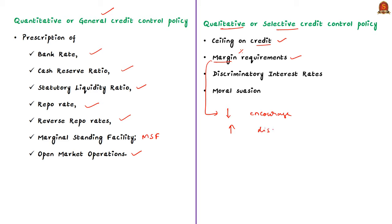One more qualitative method is through discriminatory interest rates, where RBI makes credit flow to certain priority or weaker sections by charging concessional rates of interest. RBI may also give directives regarding the purposes for which loans may or may not be given. One severe and rare action is direct action by RBI for banks that are failing to comply with its directives. RBI issues periodical letters to banks to exercise control over credit in general or over advances against particular commodities.